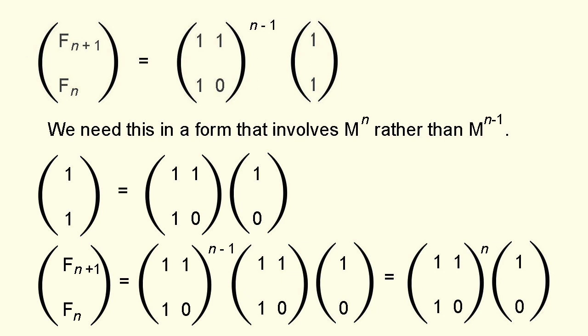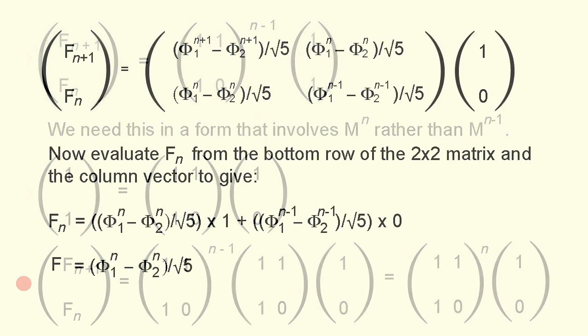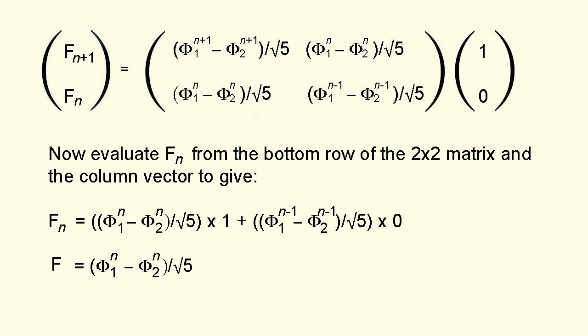We're almost there but there's one last step that we have to take. Remember from earlier on we had this formula. We need to put this into a form that involves our operator matrix to the power n rather than n minus 1. Now it happens that the column vector 1 1 is equal to our operator matrix times the vector 1 0. So we can substitute for the vector 1 1 in our formula for f n plus 1 f n so we have this. And now we can substitute from the result of the matrix multiplication we've just done to give this.